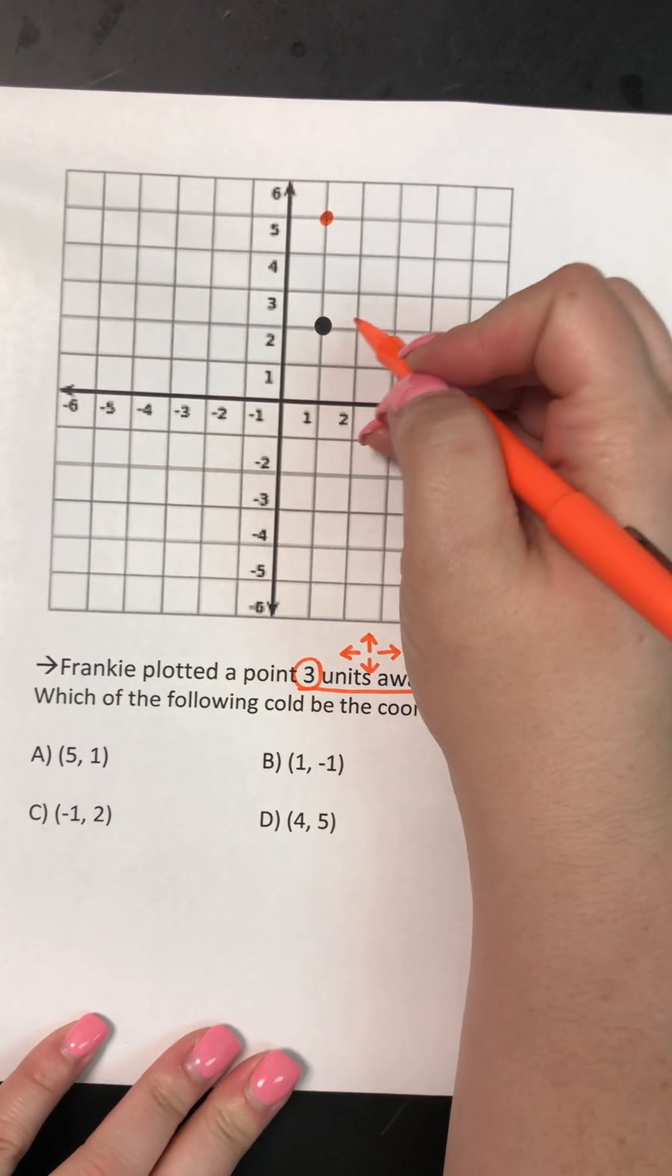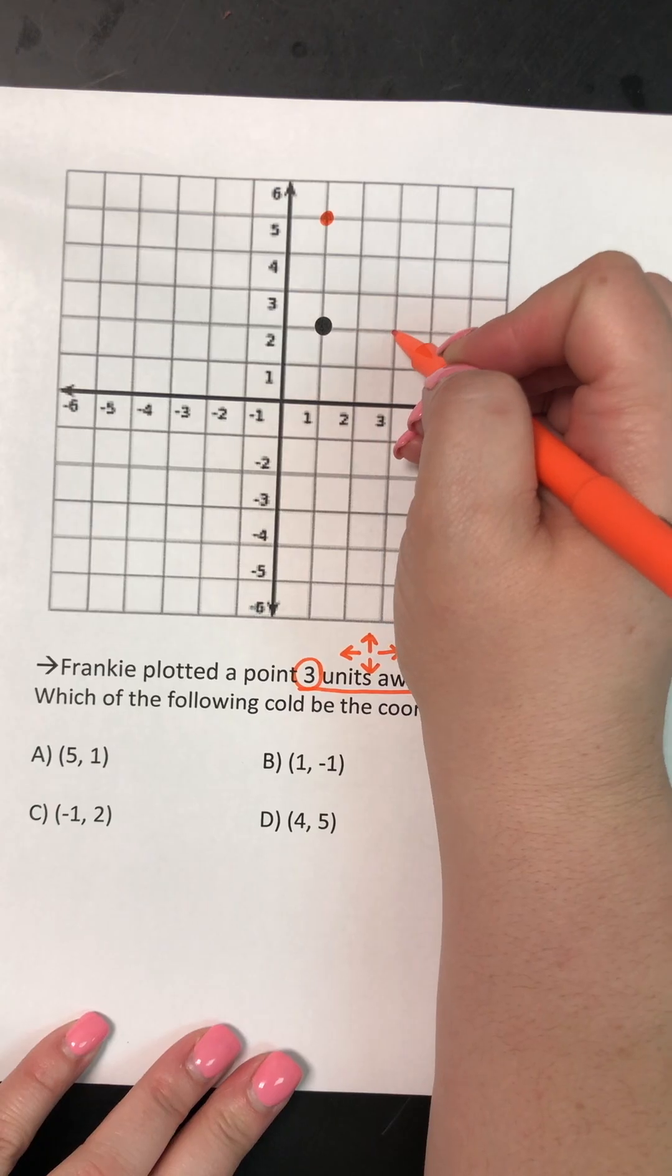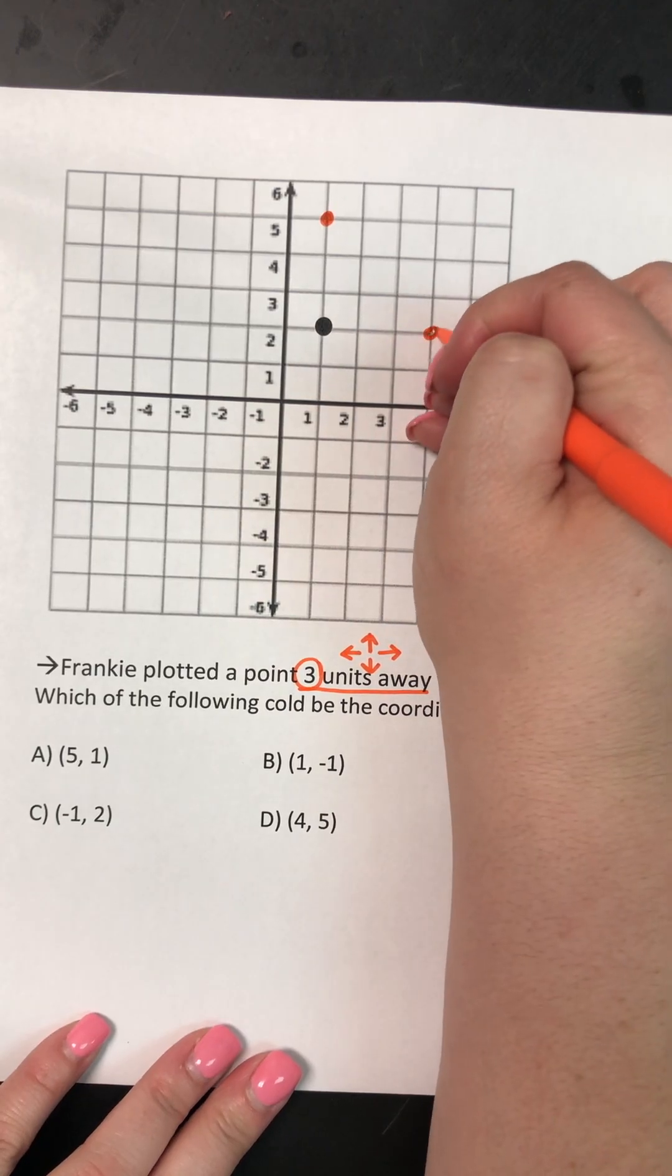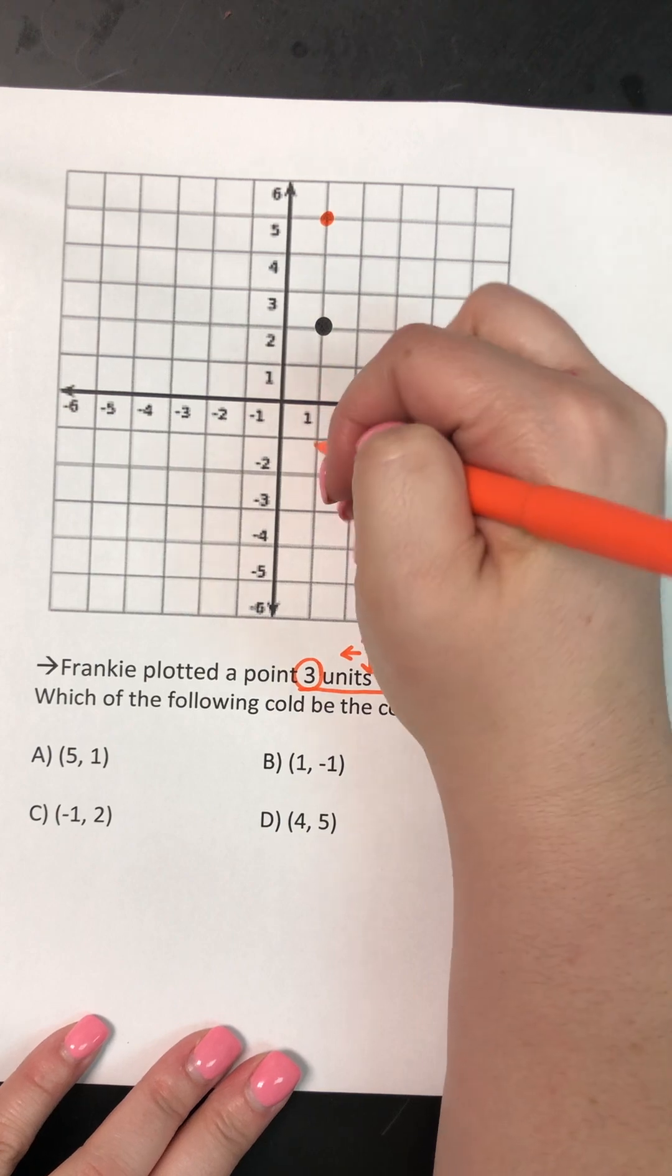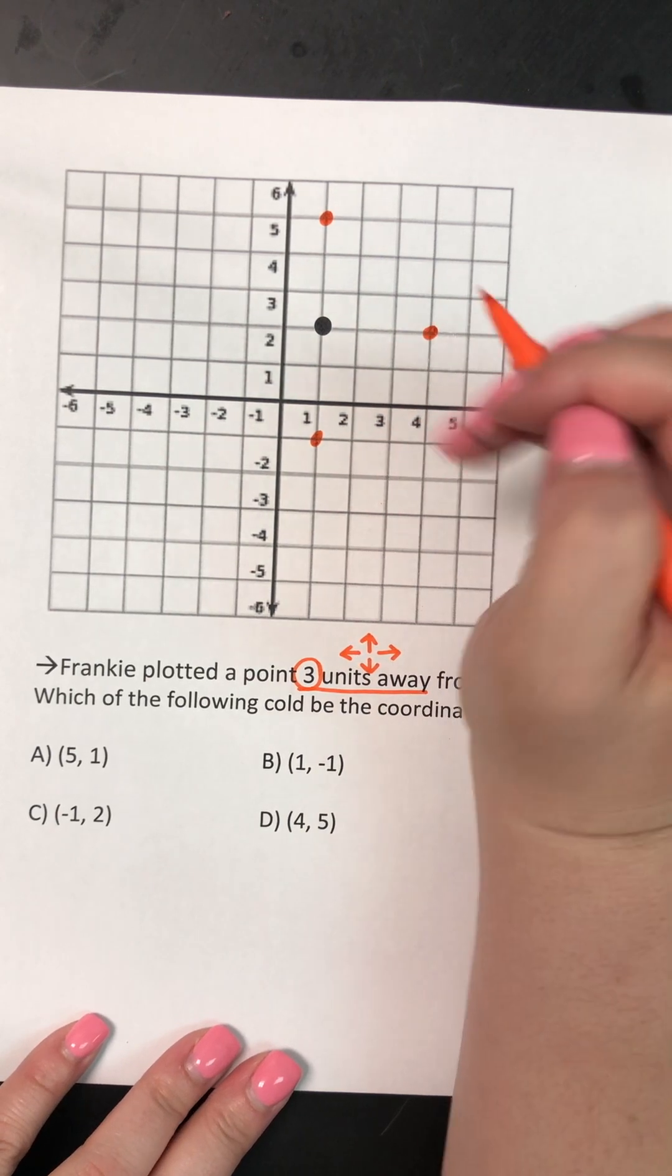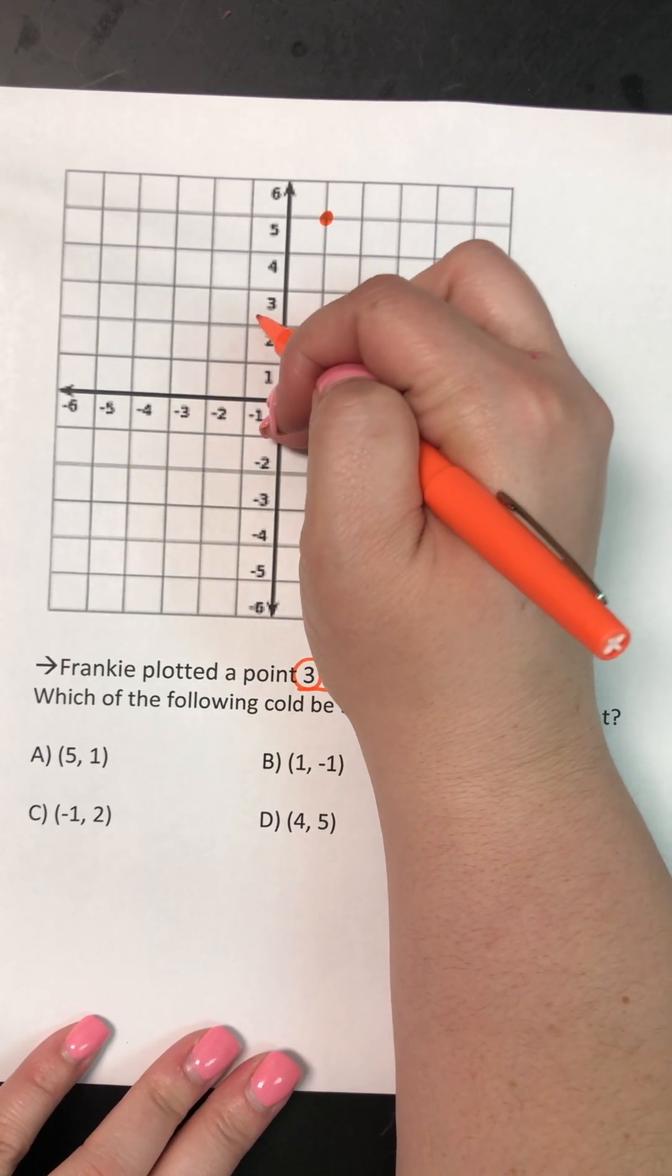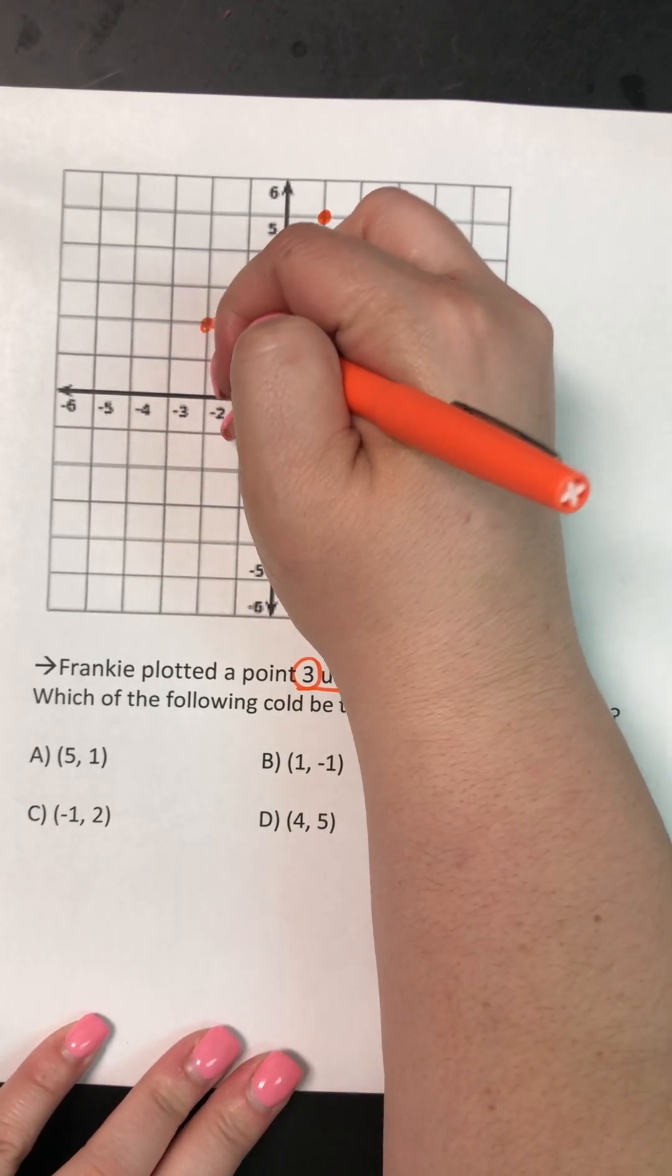and I'm gonna put a dot. And then I'm gonna go right three. One, two, three, and I'm gonna put a dot. And then I'm gonna go down three. One, two, three, I'm gonna put a dot. And then I'm gonna go left. One, two, three, and I'm gonna put a dot.